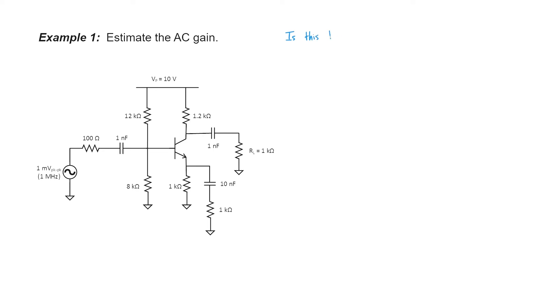First of all, I want to make sure that this transistor is properly biased in the forward active mode. I can't go through and calculate the gain unless we're sure that it's forward active. If it's saturated or if it's cut off, then it's not going to work.